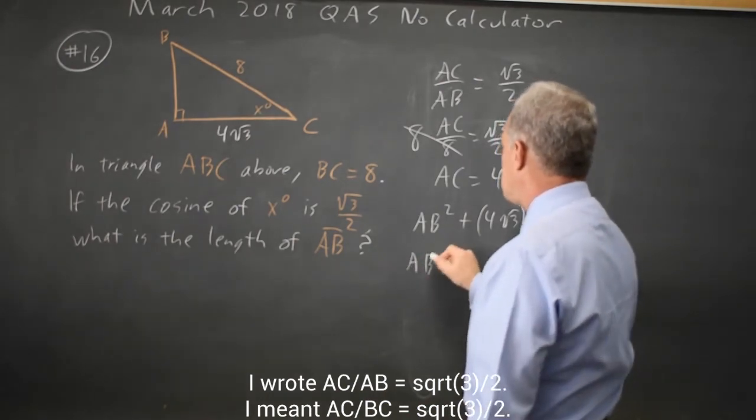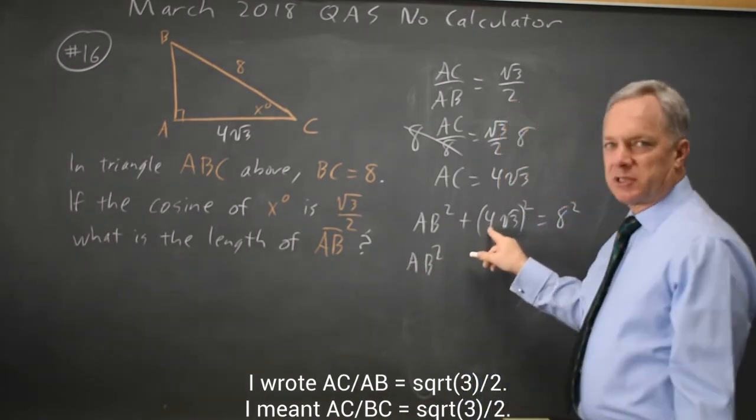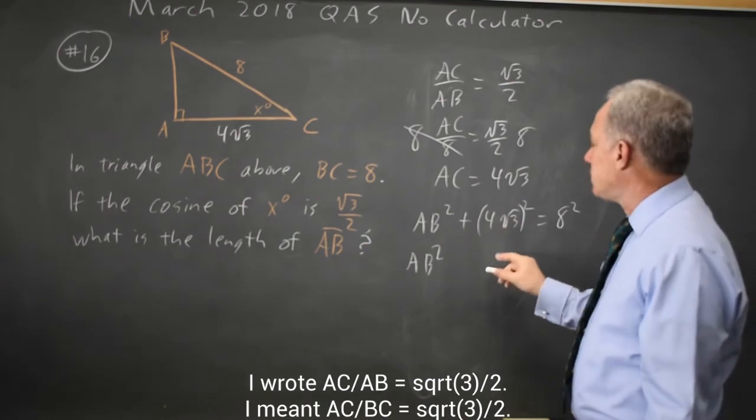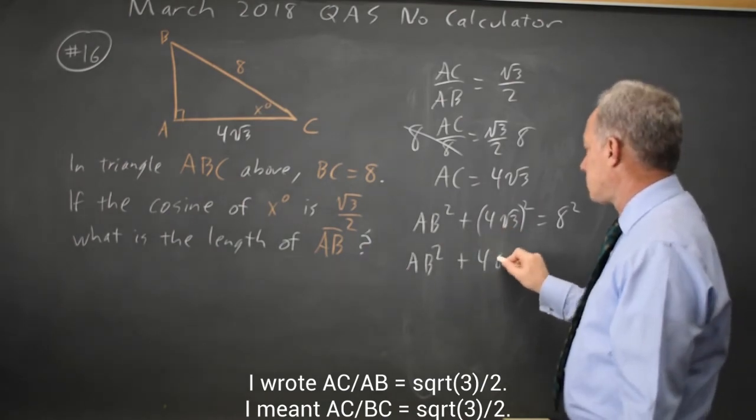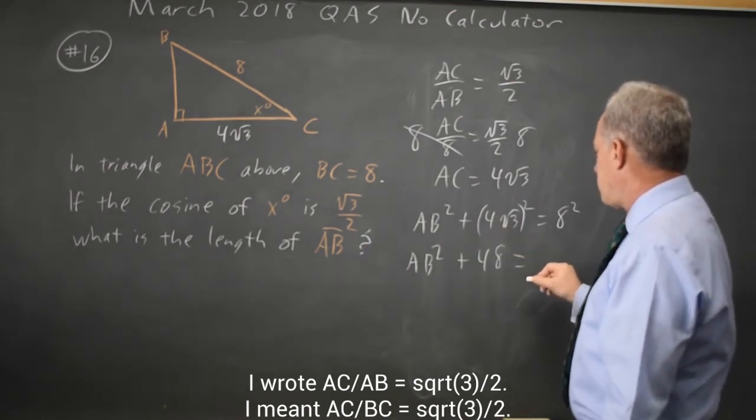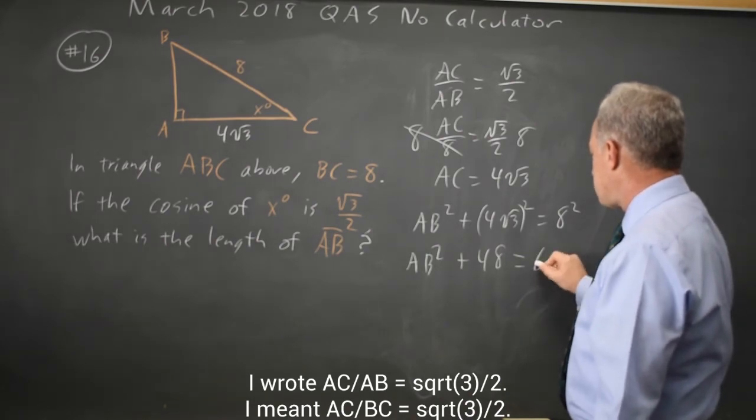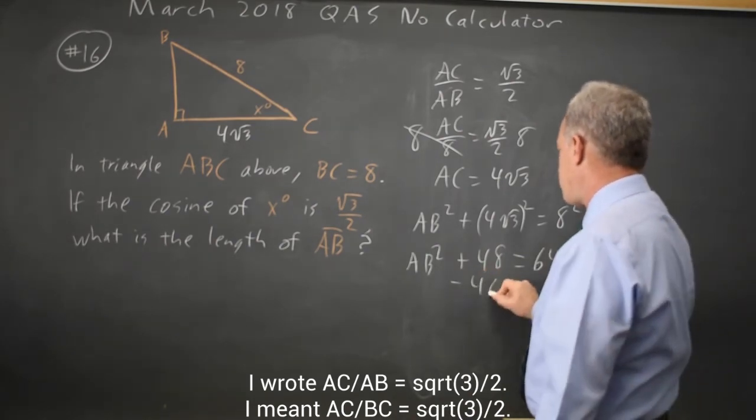AB squared, 4 squared is 16, root 3 squared is 3, 16 times 3 is 48. So AB squared plus 48 equals 8 squared, which is 64. Subtract 48 from both sides.